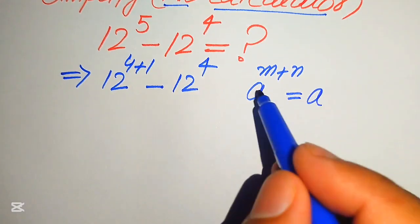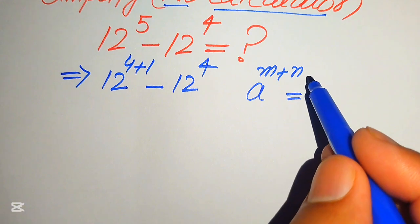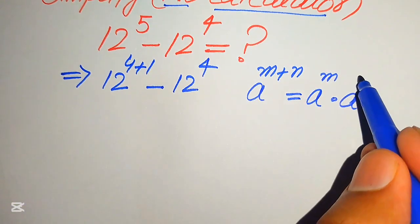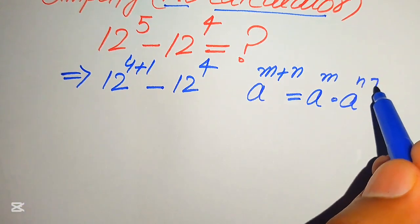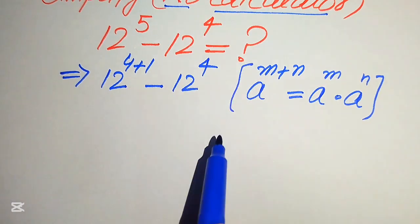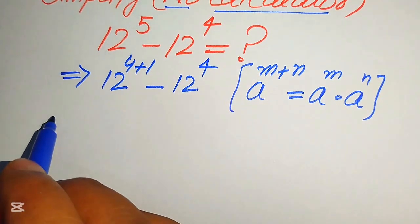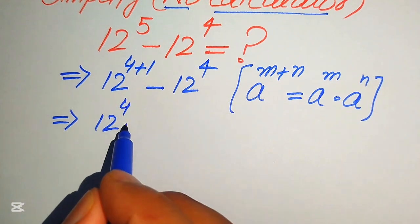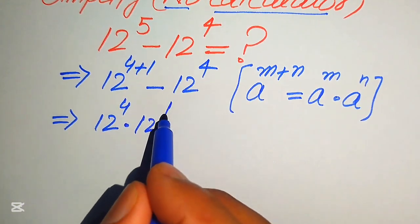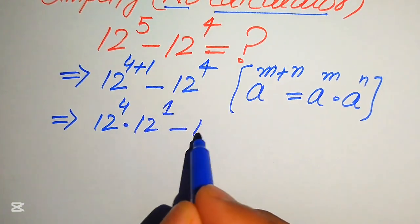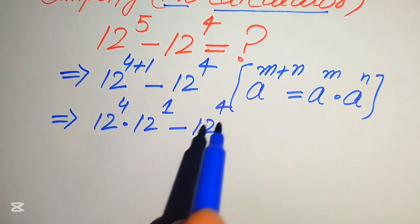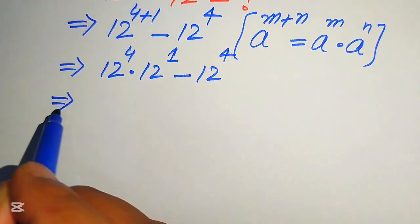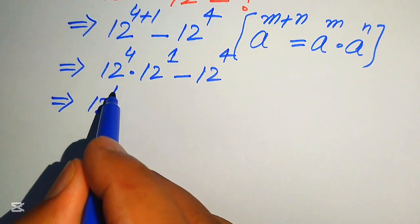According to this exponent law, a to the power of m plus n is written as a to the power of m multiplied by a to the power of n. So we break the exponent of these terms and it will be written as 12 to the power of 4 multiplied by 12 to the power of 1, minus 12 to the power of 4. Now you can see that both terms involve 12 to the power of 4.